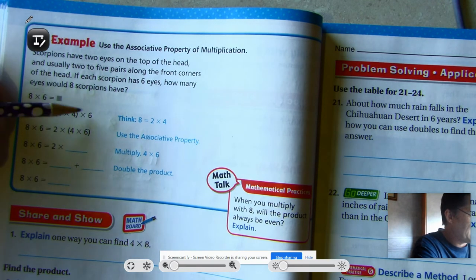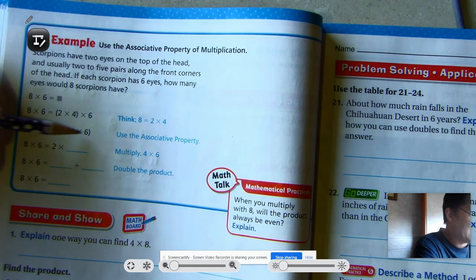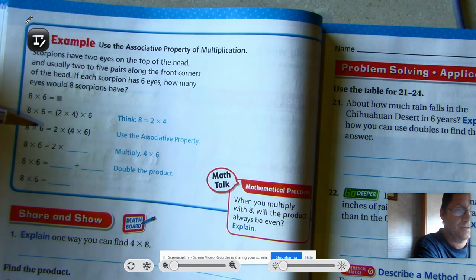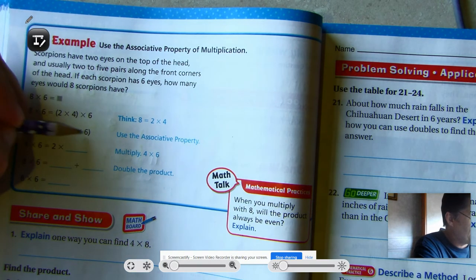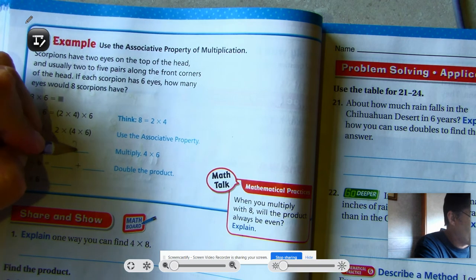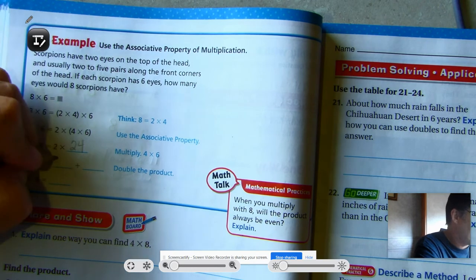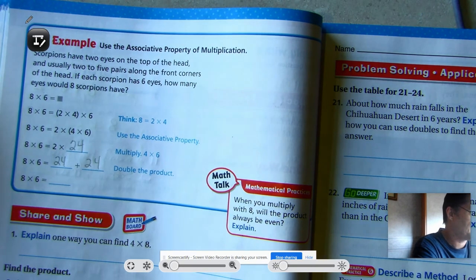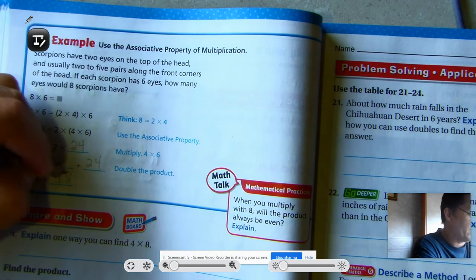So now we just go, using the associative property, we could group two times four times six, which is the same as saying two times four times six. Okay, so in a sense, let's multiply four times six first, and we get 24. And now we have two times 24, which is 24 plus 24. And that would be 48.